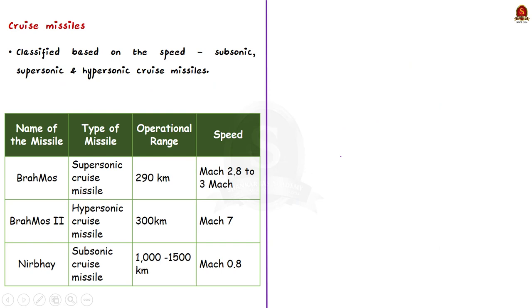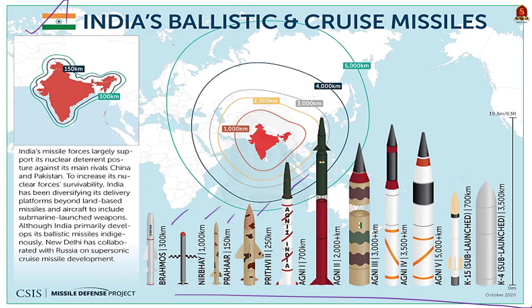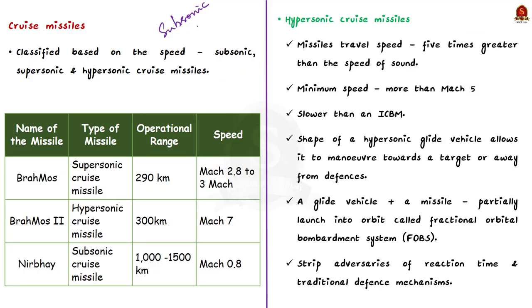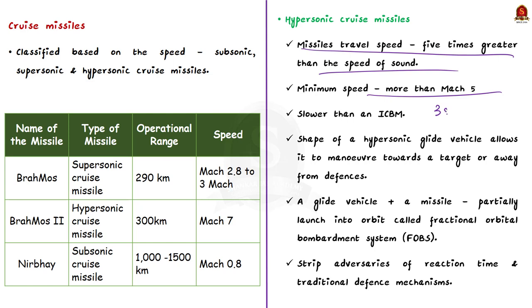Cruise missiles are further classified by speed as subsonic, supersonic, and hypersonic. A hypersonic cruise missile travels at speeds five times greater than the speed of sound — a minimum speed of more than Mach 5, or 3,800 miles per hour. Though slower than an ICBM, the shape of a hypersonic glide vehicle allows it to maneuver toward a target or away from defenses.